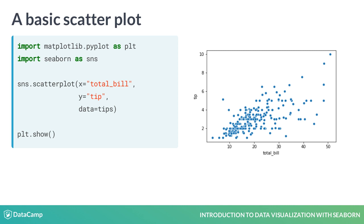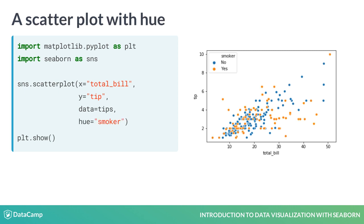What if we want to see which of these data points are smokers versus non-smokers? Seaborn makes this super easy. You can set the hue parameter equal to the dataframe column smoker, and then Seaborn will automatically color each point by whether they are a smoker. Plus, it will add a legend to the plot automatically. If you don't want to use pandas, you can set it equal to a list of values instead of a column name.